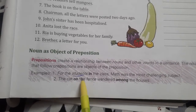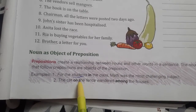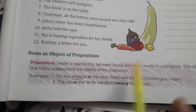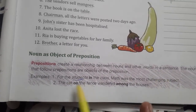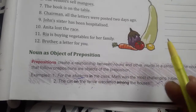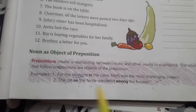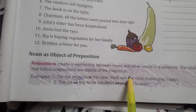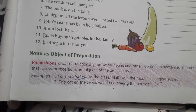For example: 'For the students in the class, math was the most challenging subject.' Here 'students' and 'class' follow the prepositions 'for' and 'in,' so they are objects of the preposition, because the preposition creates a connection between the nouns and other words in the sentence.